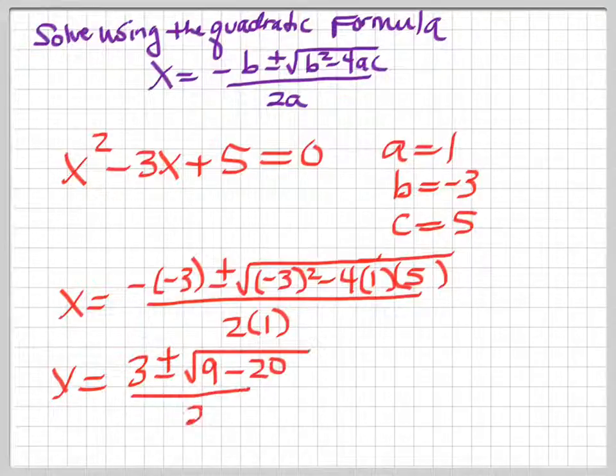All right, so next I'll simplify. So I'll get 3 in the front, and then inside my radical I'll get 9 minus 20 over 2.